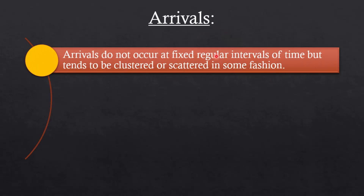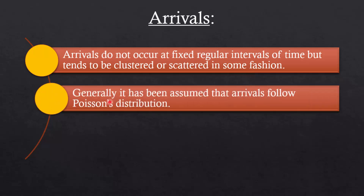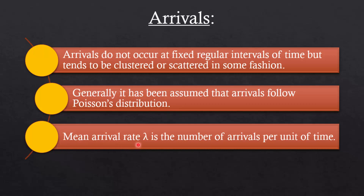Let us understand the arrival characteristics first. Arrivals do not occur at fixed regular intervals of time but tend to be clustered or scattered in some fashion. The inter-arrival times follow some distribution system. Generally it has been assumed that arrivals follow the Poisson distribution, and the mean arrival rate, represented by lambda, is the number of arrivals per unit time.